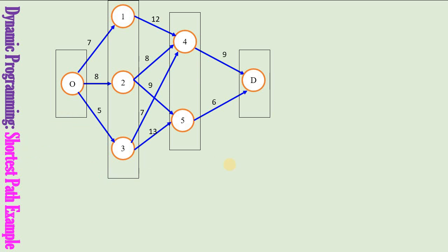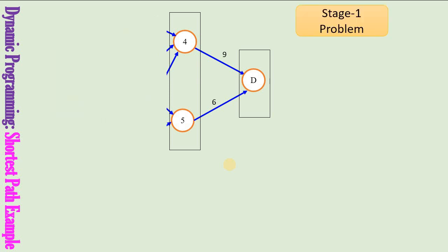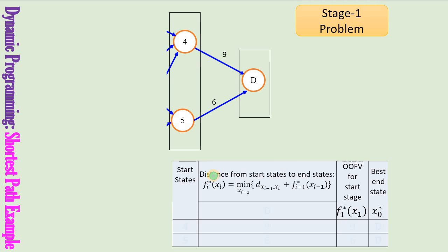Let us focus on the stage 1 problem. This is the table we are going to use to solve each stage problem. Notice that this table is slightly different from the previous video: for forward recursion the table had end states and start states arranged differently, but now in backward recursion we have start states on one side and end states on the other. For the stage 1 problem, the possible start states are 4 or 5 and the end state is D.